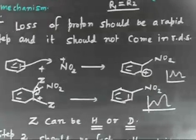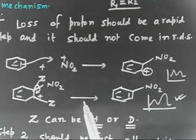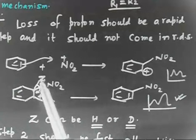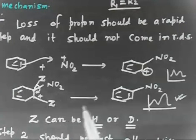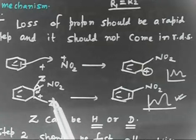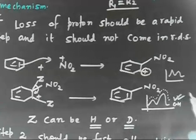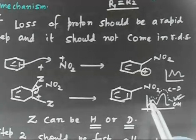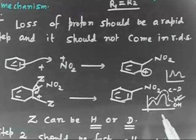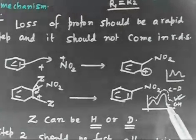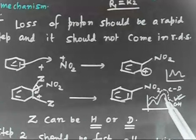If the second step were rate-determining, then the carbon-hydrogen or carbon-deuterium bond breaks in that step. Since the C-D bond is stronger than the C-H bond, the activation energy for breaking C-D would be higher. So on the potential energy diagram, the carbon-deuterium curve sits higher, meaning the rate for C-D would be slower and the rate for C-H would be faster.